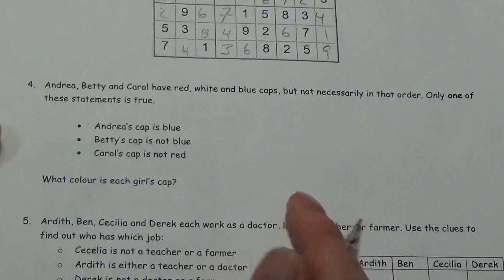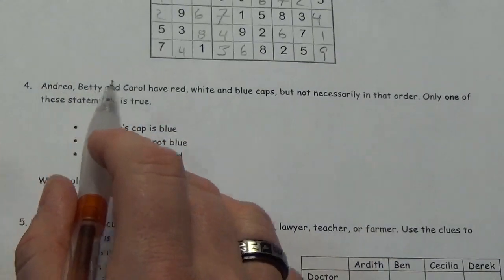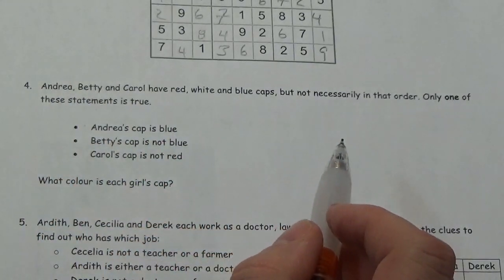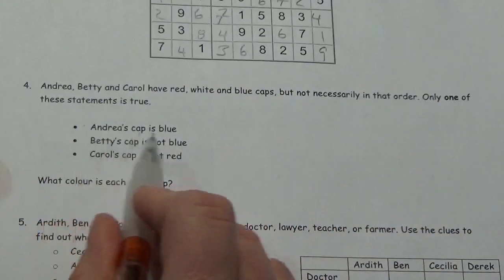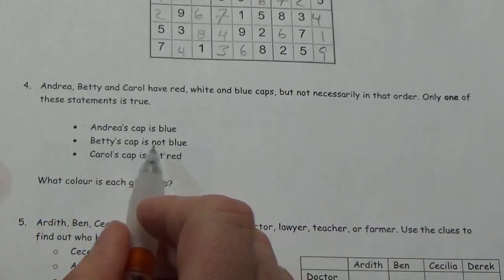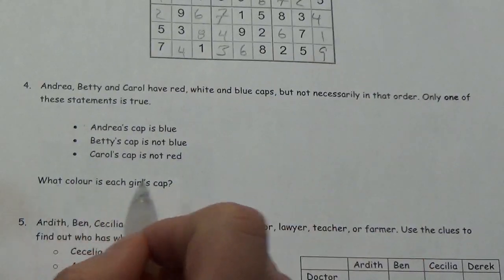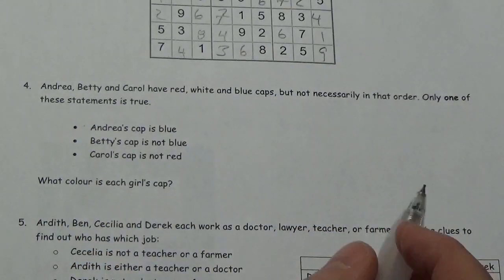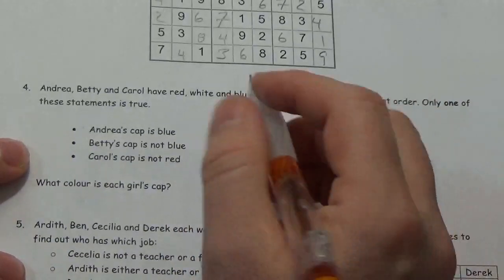Now we're going to look at a couple of slightly different logic puzzles. Andrea, Betty, and Carol have red, white, and blue caps — but not necessarily in that order. Only one of these statements is true: Andrea's cap is blue; Betty's cap is not blue; Carol's cap is not red. So what color is each girl's cap? The important part is that only one of those statements is true.